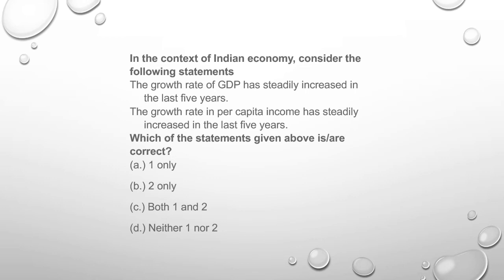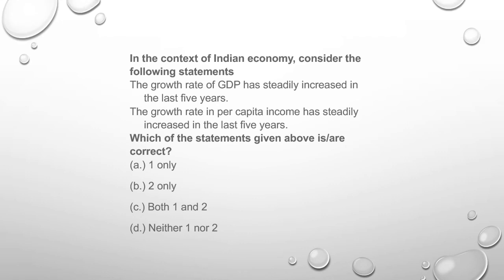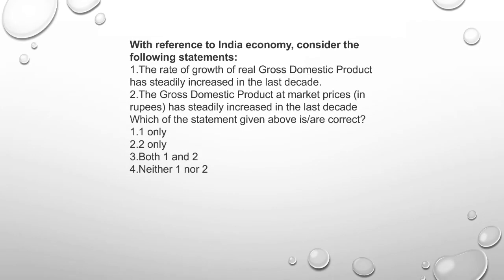On average, per capita income has increased in the last 5 years. This makes option B correct. Per capita income does show a gradual increase, but GDP increase is our goal.